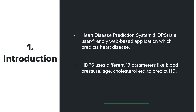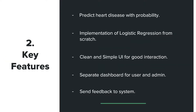The heart disease prediction system is a web-based application which basically predicts heart disease. It uses 13 different attributes or parameters like blood pressure, age, cholesterol, gender, and so on to predict heart disease. You give those 13 different medical attributes to the system and the system will predict heart disease with a probability between 0 and 1. Logistic regression is implemented right from scratch instead of just importing it from a library like scikit-learn.